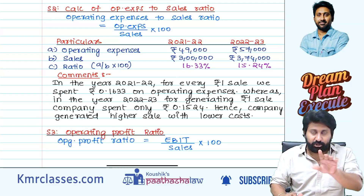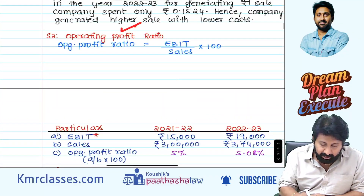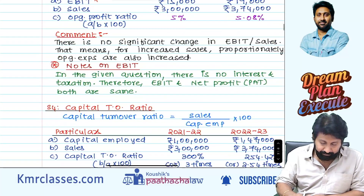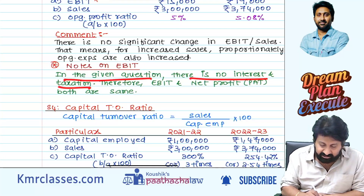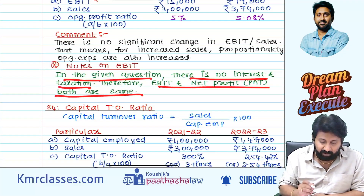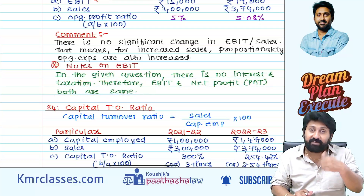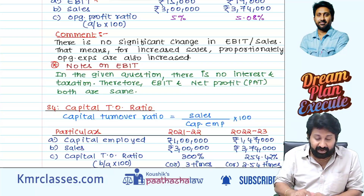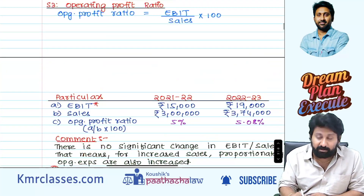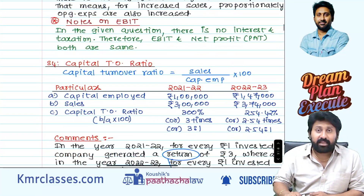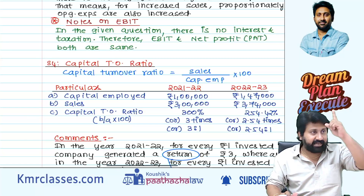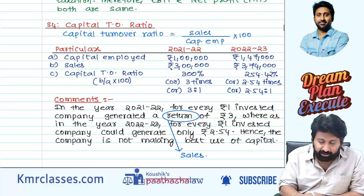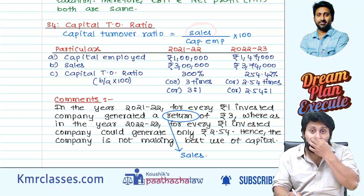Operating profit ratio: EBIT by sales. In the given question there is no interest and taxes, therefore EBIT and net profit both are the same. So in the question they have given net profit and there is no interest or tax, therefore net profit becomes EBIT. EBIT by sales — if interest and tax are given you have to reverse calculate; otherwise net profit and EBIT will be the same.